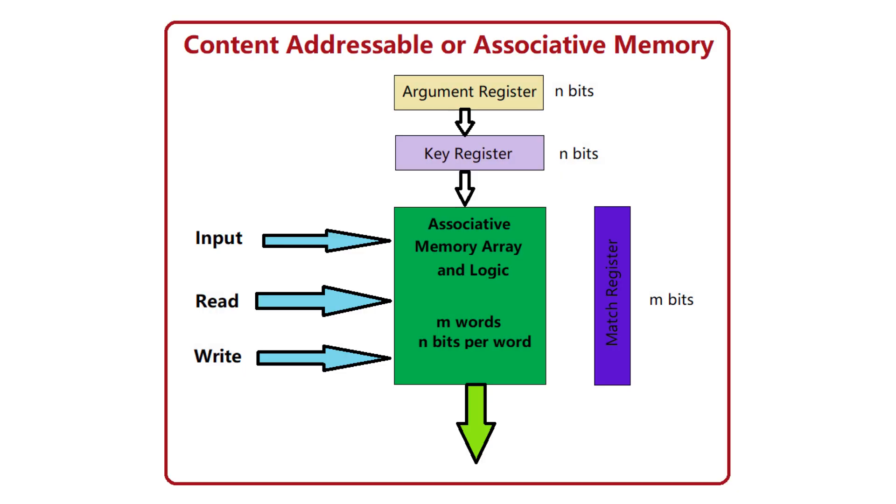Associative memory, also known as Content Addressable Memory or CAM, is different. You give it the data or part of the data, and it searches its entire memory to find a match.